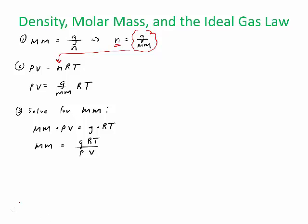Now, if you notice, the grams over volume is actually density. Density is mass over volume, so g over V is density.